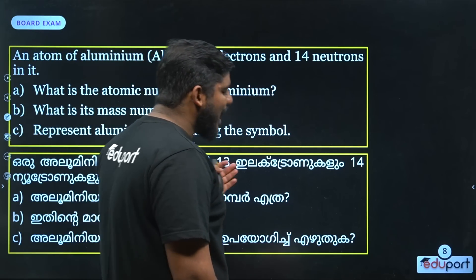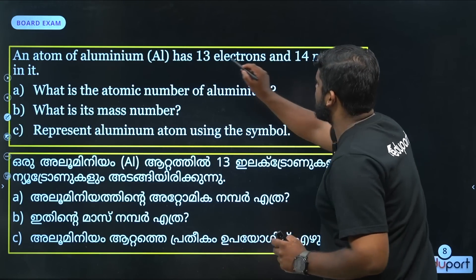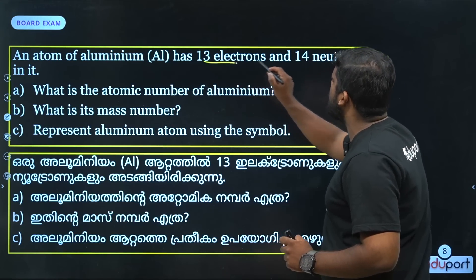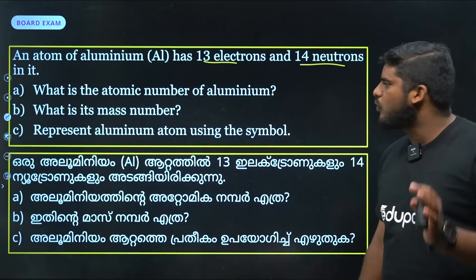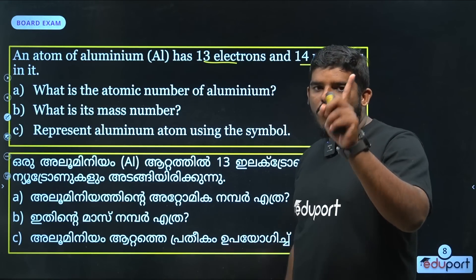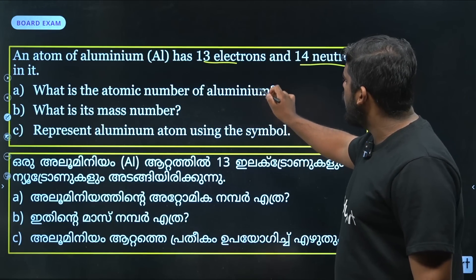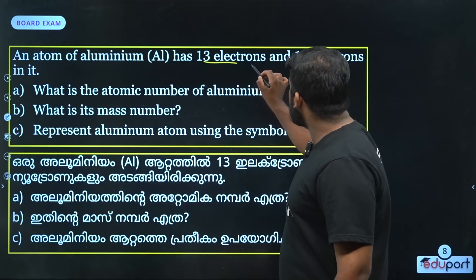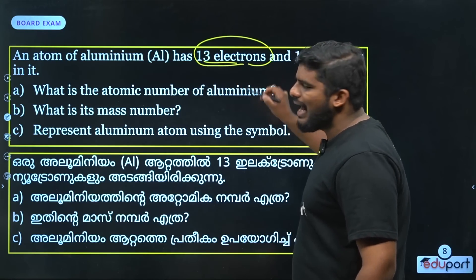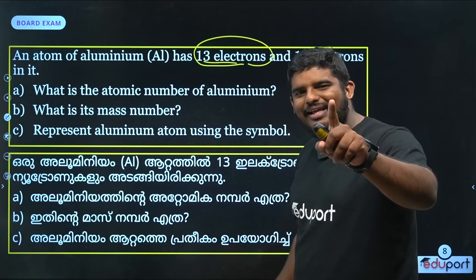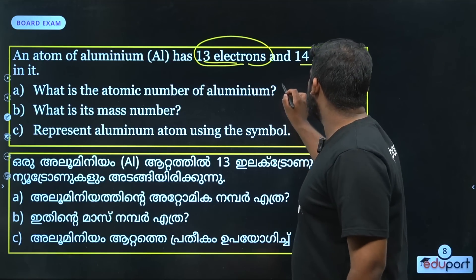An atom of aluminum has 13 electrons and 14 neutrons. What is the atomic number of aluminum? The atomic number equals the number of electrons, which is 13.